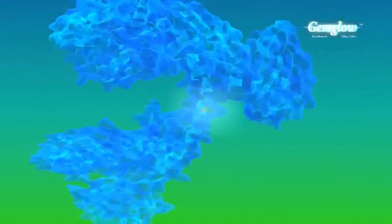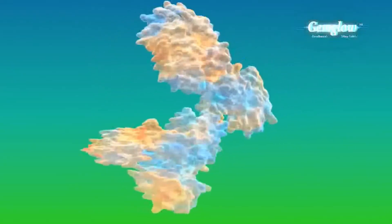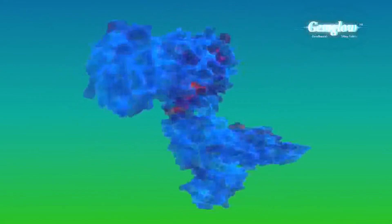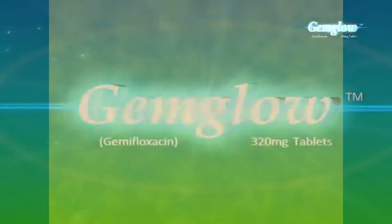Gemglal also inhibits the DNA topoisomerase 4 enzyme. Consequently, the newly replicated DNA strand cannot be unlinked from the parent strand. This results in suppression of vital reactions in bacterial cell and ultimately its death.